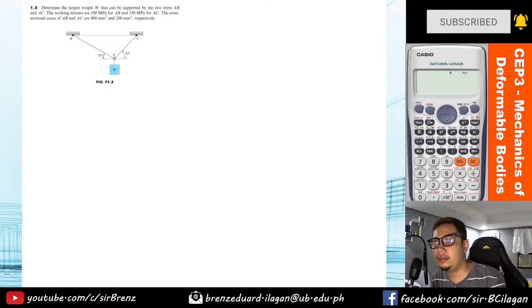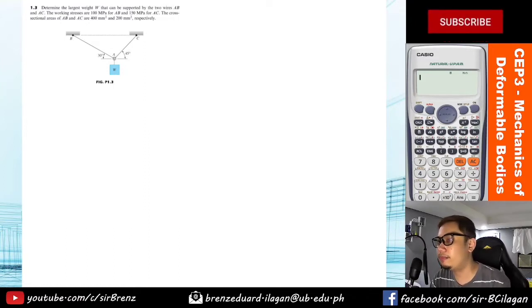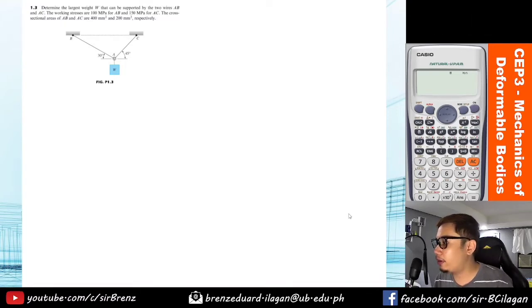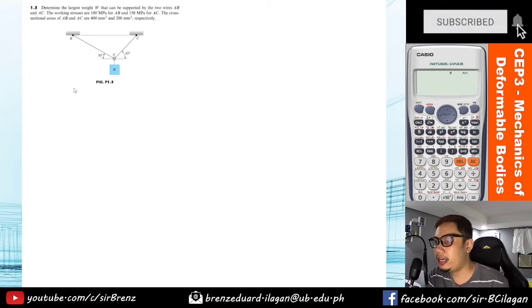Alright guys, good day. Here are the random problems that we solved for the topic on simple stress. For our first problem, let me just select my pen. Let's read the problem: Determine the largest weight W that can be supported by the two wires AB and AC.